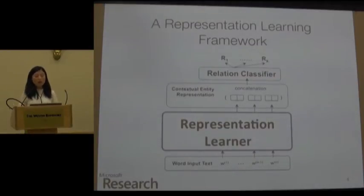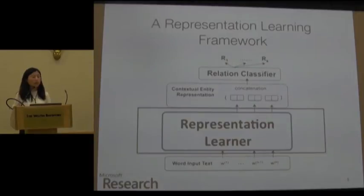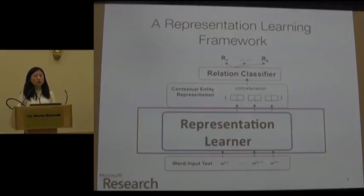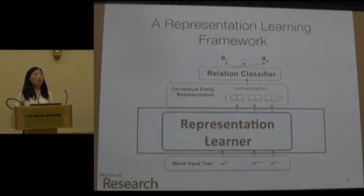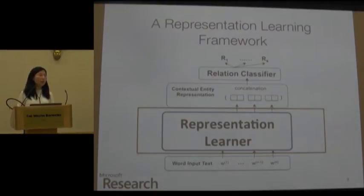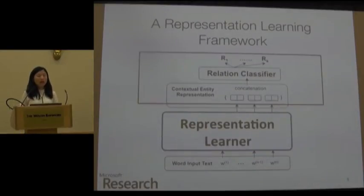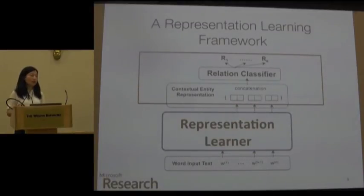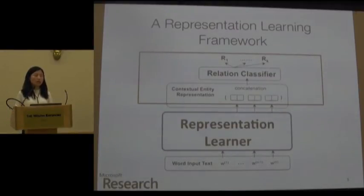Our major technical contributions in this paper are the exploration of two ways to improve this framework. On the representation learning part, we propose a Graph LSTM to incorporate all linguistic structures in the model to learn robust representations. On the other hand, we also utilize the characteristics of n-ary relations by using multi-task learning to leverage more data and strengthen the representations.